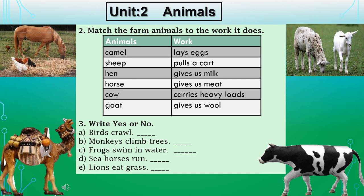In the second column, the work is written: lays eggs, pulls a cart, gives us milk, gives us meat, carries heavy loads, and gives us wool. First, read the animal's name — camel. Think about it: camel carries heavy loads. So you have to match camel with 'carries heavy loads' by drawing a line to that work.